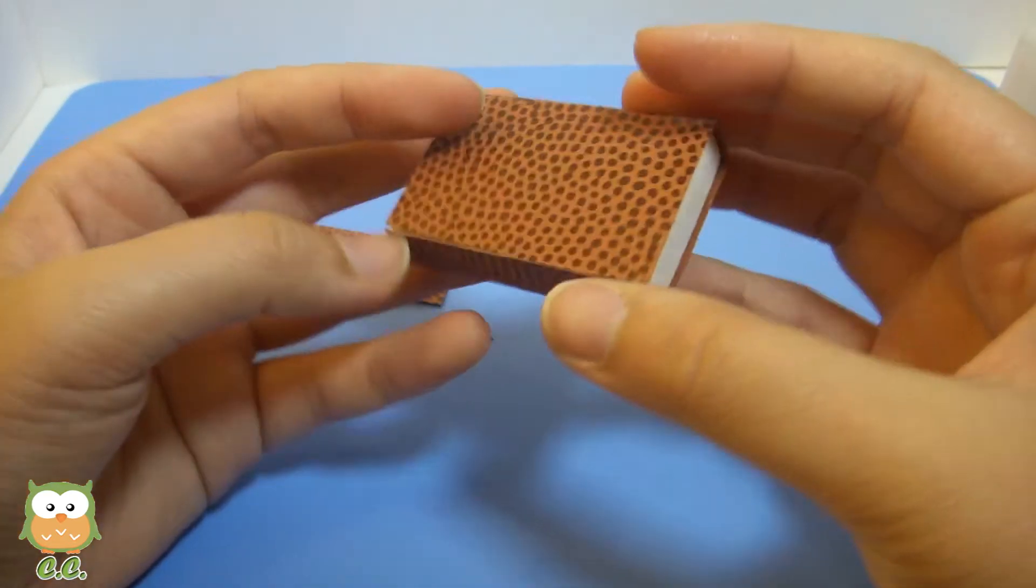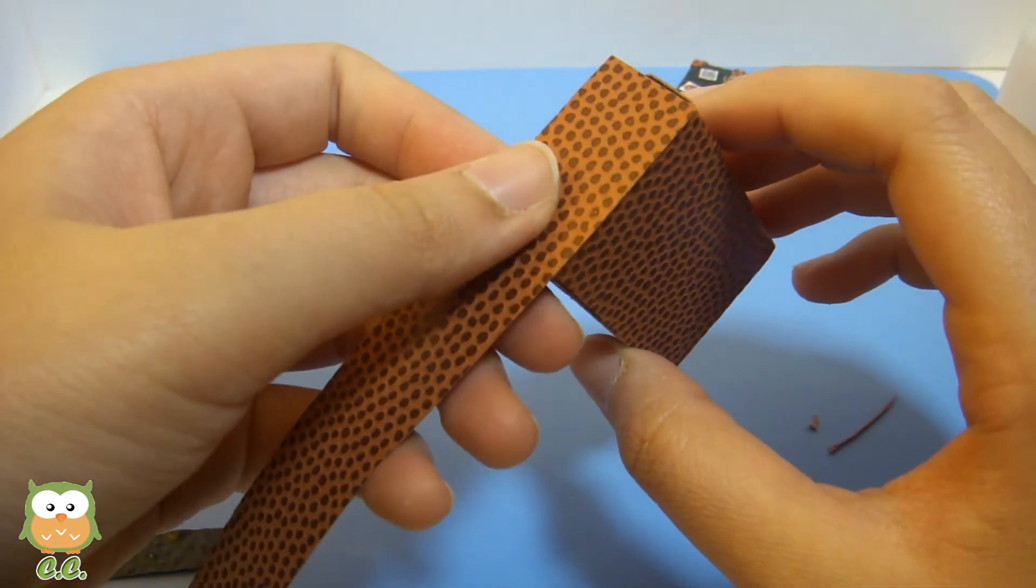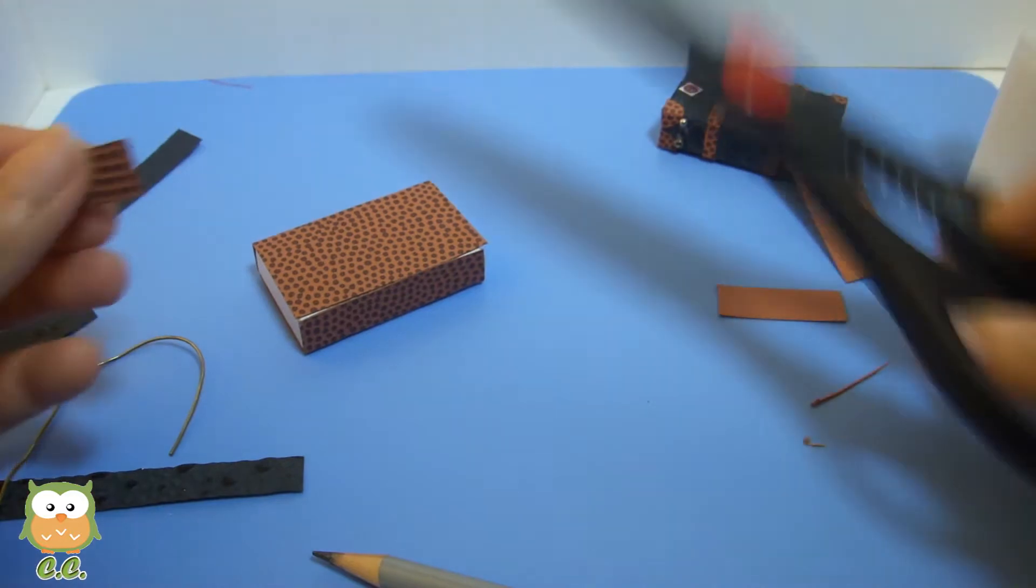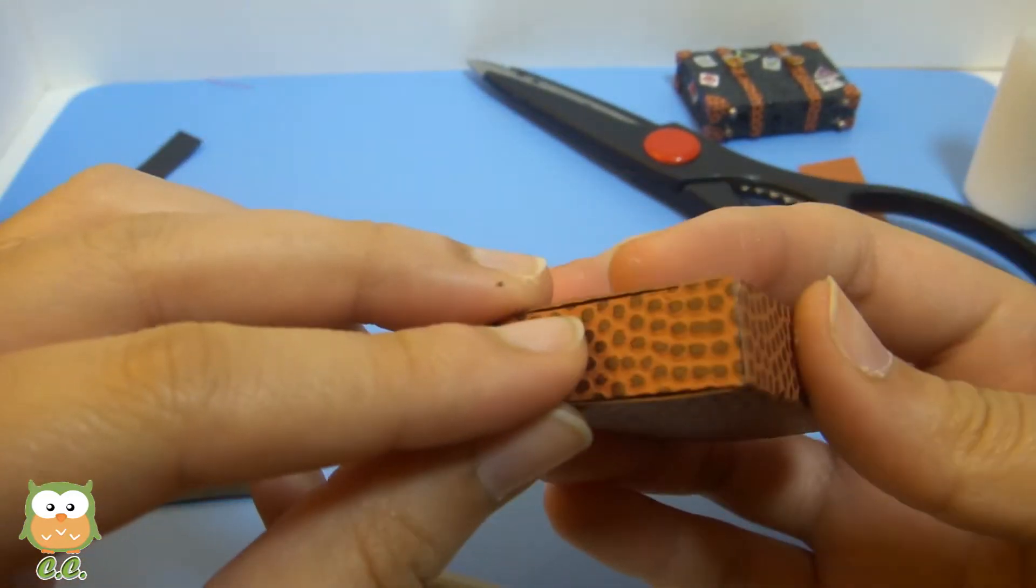Alright, so now you have this and then you just need to cut a strip to cover this side and this side. And then you can just glue it right on this side here like that.